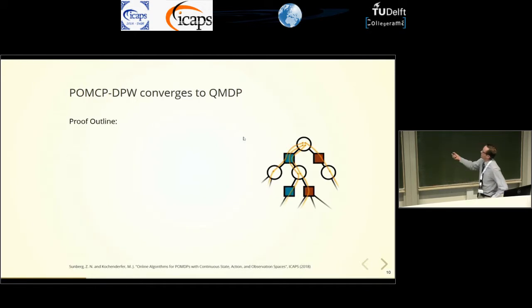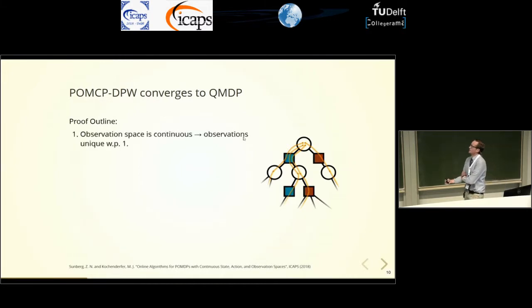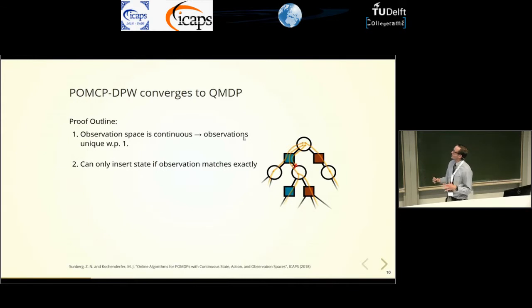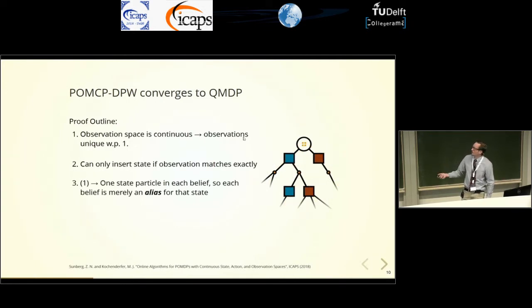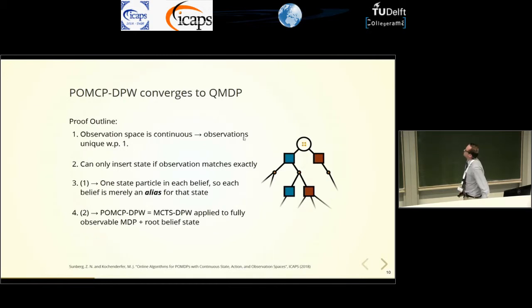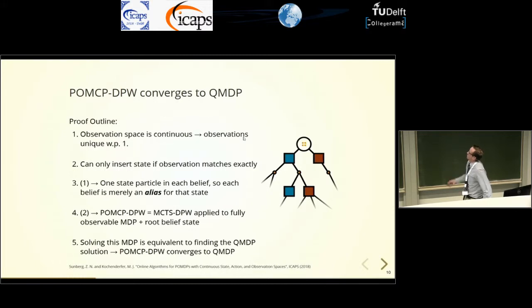The proof goes something like this. Since the observation space is continuous, observations generated in tree search are unique with probability one. Using an unweighted particle filter, you can only insert a state into the particle collection if the observation matches exactly — but this never happens, so there is only ever one state particle in each belief. That means the belief is just an alias for a fully observable state in this tree search. This is equivalent to applying MCTS with DPW to an MDP where the root node is a belief but all other nodes correspond to fully observable states. Therefore it converges to QMDP.